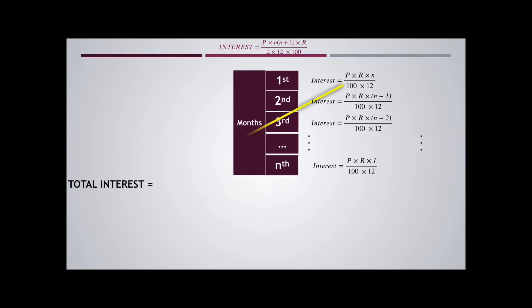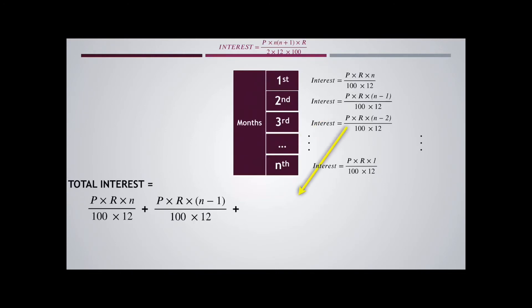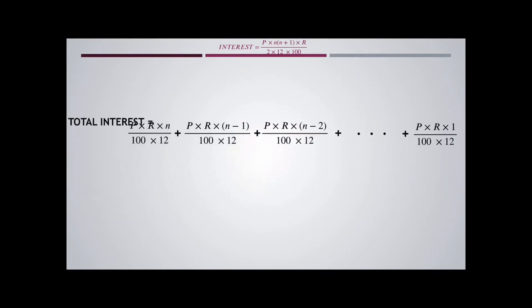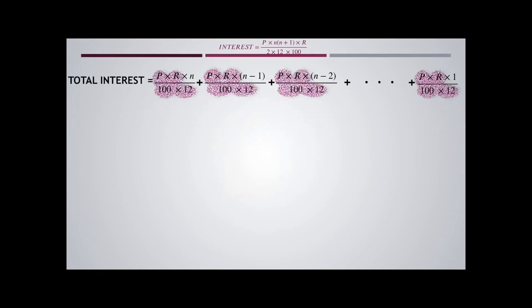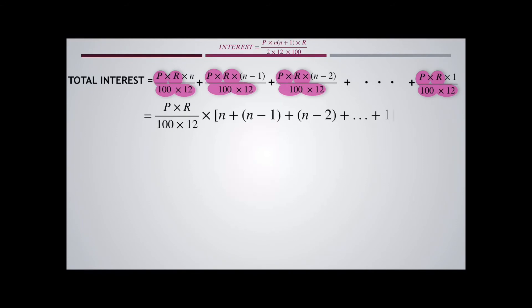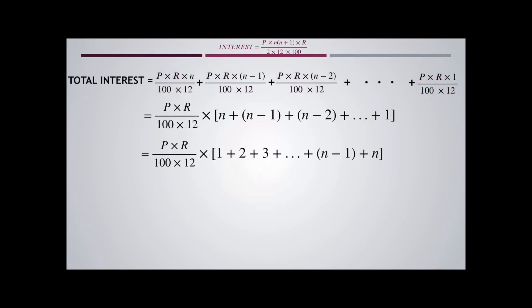So the total interest is the sum of all these individual interests. In the simplification, we can take out the common factors P × R / (100 × 12). So the remaining part is N + (N-1) + (N-2) + ... + 1, which we can rewrite as P × R / (100 × 12) into 1 + 2 + 3 + ... + N.